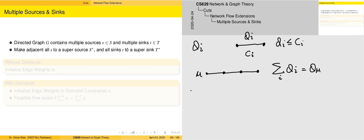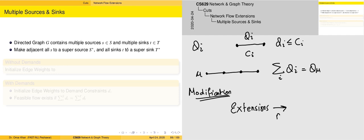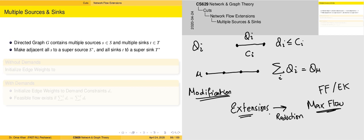What if we have some modifications to the basic problem? This lecture is going to look at all of these extensions to the maximum flow problem. The idea is that we have to take all of these extensions and reduce them — this is basically a reduction to the maximum flow problem. We know that the solution to maximum flow is possible using Ford-Fulkerson or Edmonds-Karp, but we do not have algorithms related to the extensions, so we have to convert the extensions to the maximum flow problem.